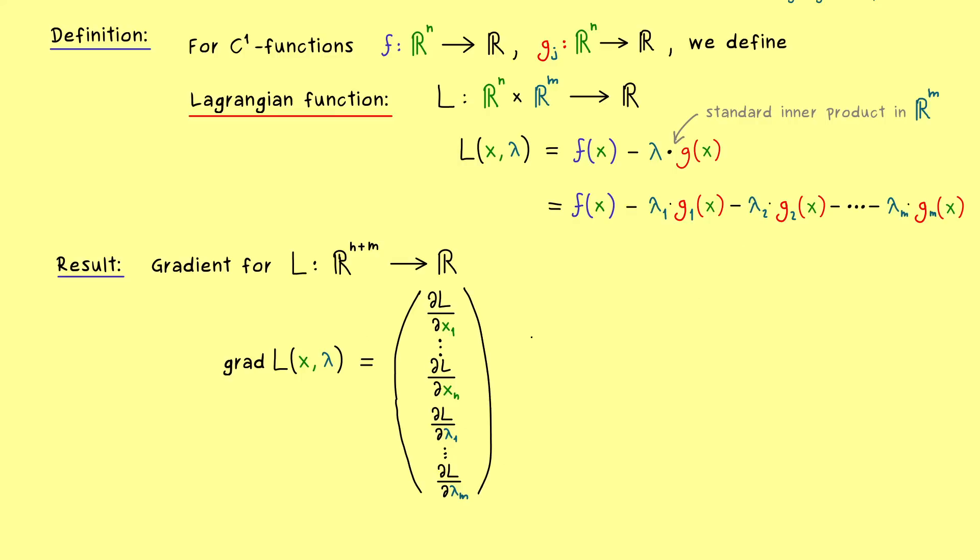And now by using our definition of L, we can calculate all these components. And there we see, with respect to the components of x, we have the partial derivatives of f and the partial derivatives of the g functions. In other words, for the first n entries here, we just have gradients. Namely, we have the gradient of f minus the gradient of the g functions. So first we have lambda 1 times the gradient of g1. Then minus lambda 2 times the gradient of g2 and so on. Hence, in the end here, we get just the whole sum of the gradients of the g functions. And we also have the coefficients lambda j involved.